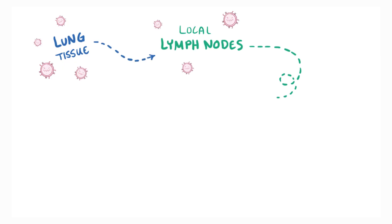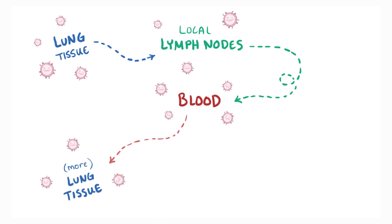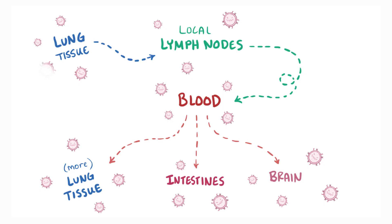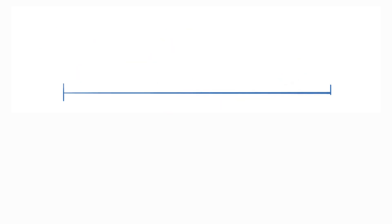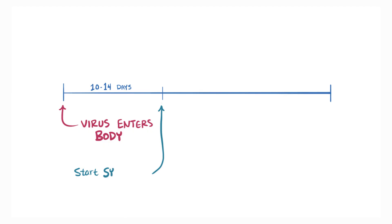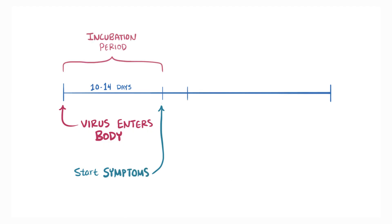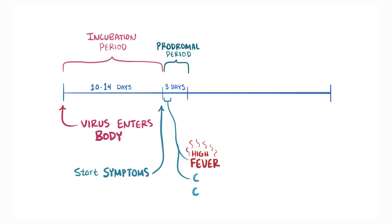From there it continues to spread, eventually getting into the blood and spreading to more lung tissue as well as other organs like the intestines and the brain. It typically takes 10 to 14 days from the time that the virus enters the body to the start of symptoms — this is the incubation period. Once the symptoms start, we've entered the prodromal period, which typically lasts around three days, and starts with a high fever and the three C's.